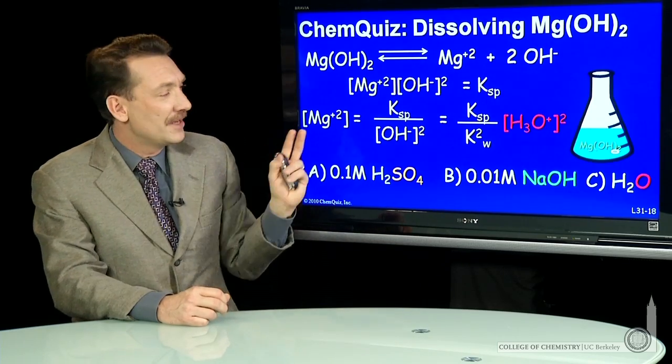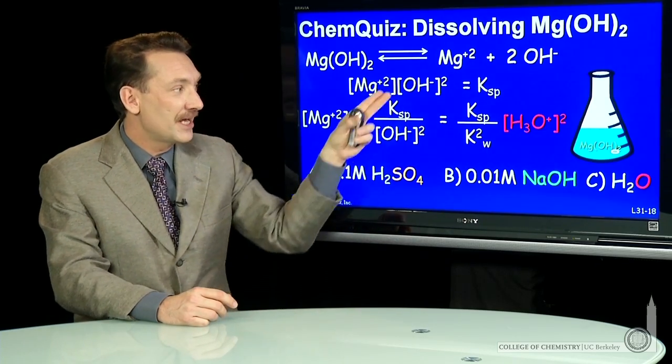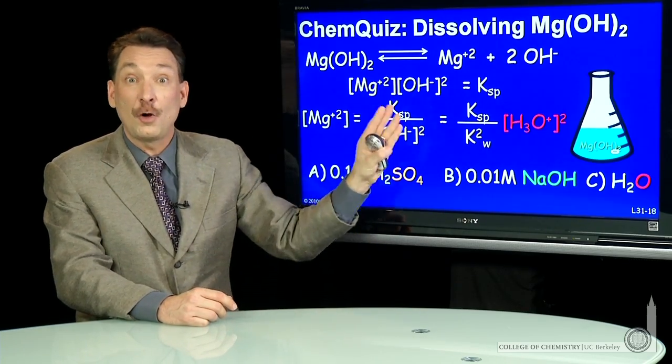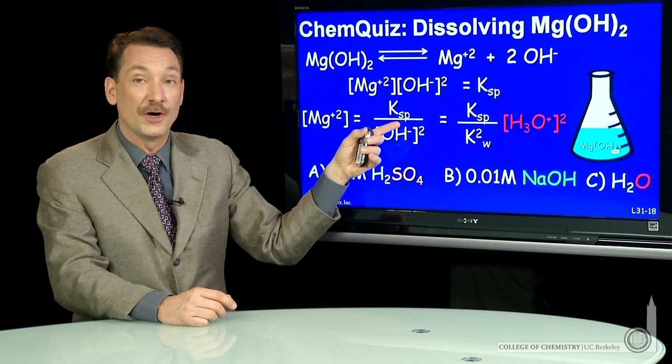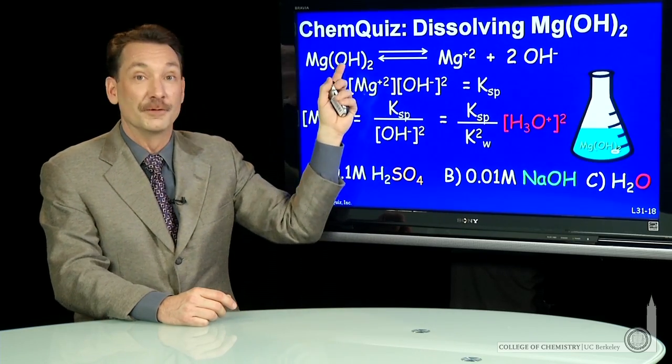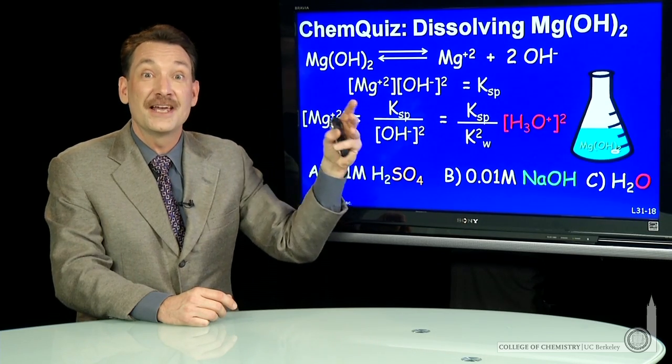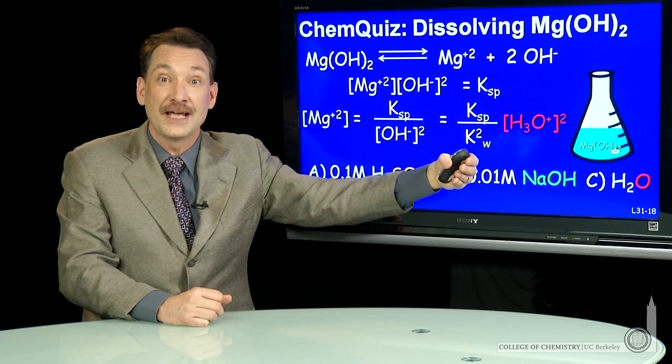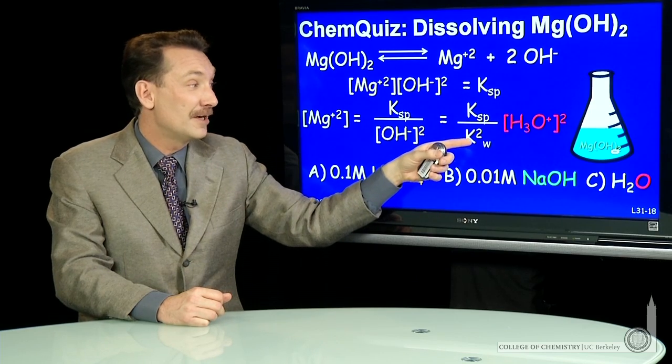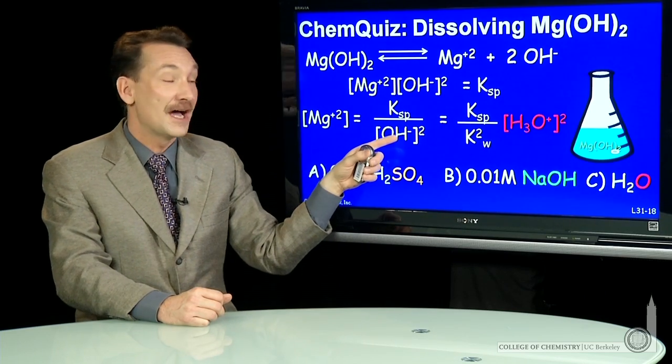But what it shows you, it shows you, well, I understand how equilibria hold. They all hold at the same time. So when I take this one, which is just this equilibrium, and I substitute Kw, that's just saying that equilibrium is also holding at the same time. So Kw is H₃O⁺ times OH⁻.